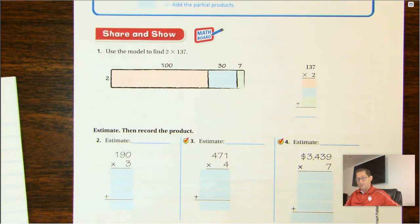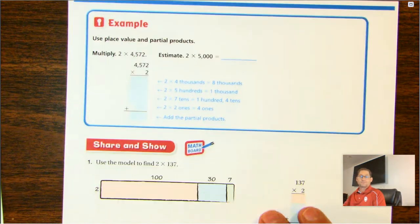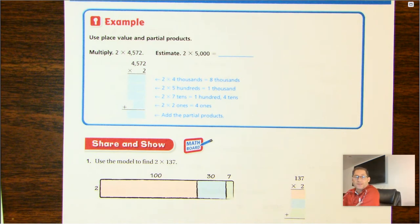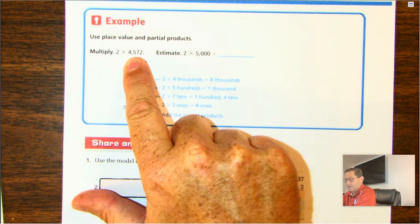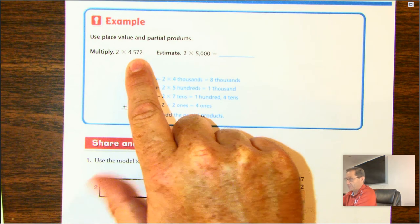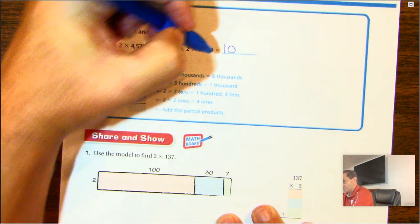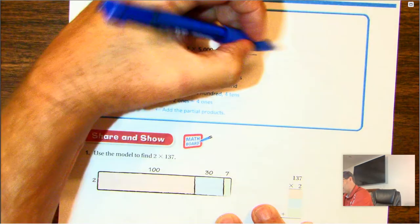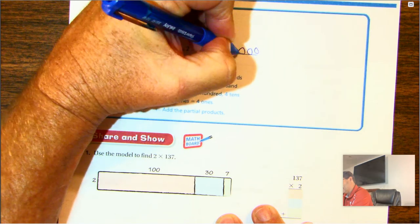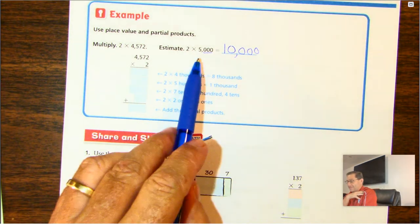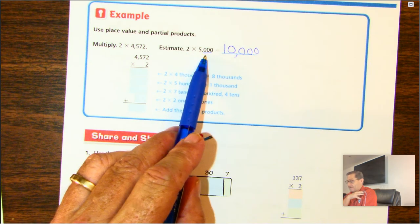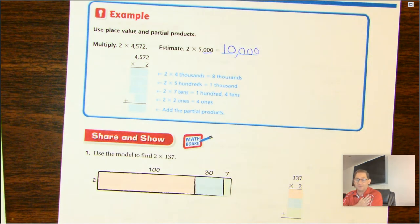Number 7, page 72 — use place value and partial products: 2 times 4,572. Our estimate would be 2 times 5,000, because 4,572 is close to 5,000. 2 times 5 is 10, and we're in the thousands with 5,000, so put three zeros at the end. Remember, we multiply the basic fact and then put the same number of zeros at the end of the product.